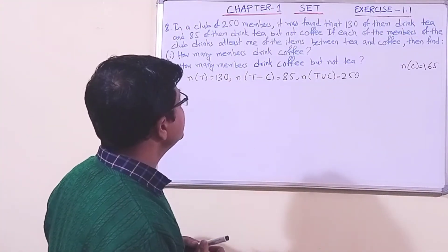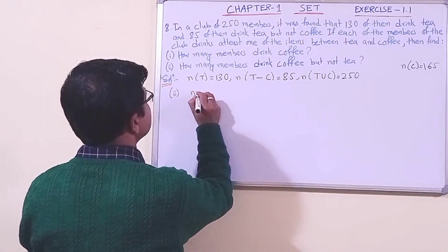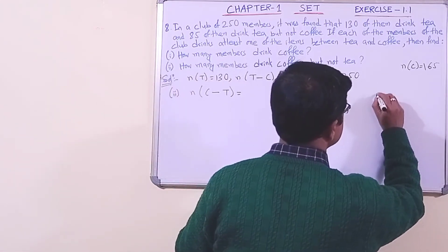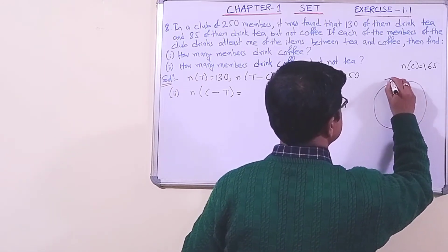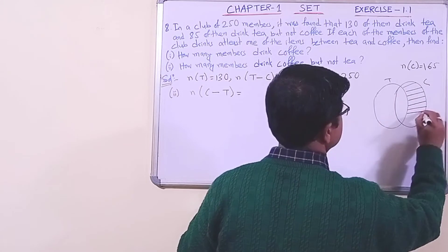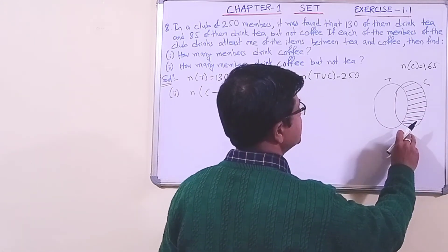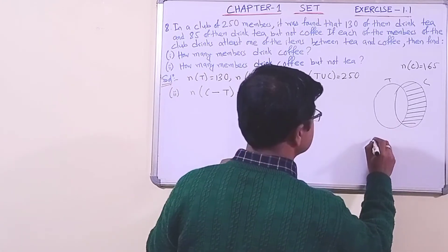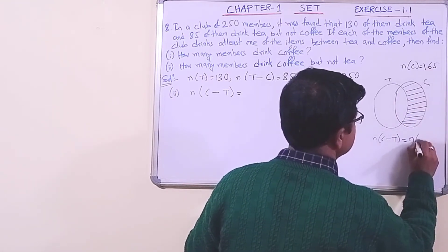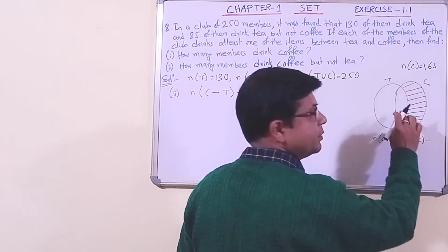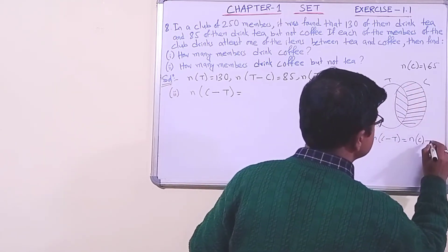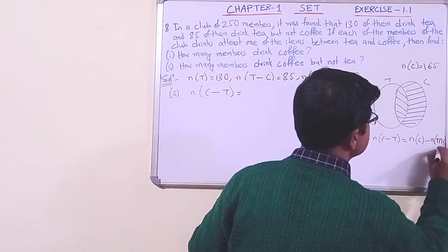Now let us do number two. How many members drink coffee but not tea? So we need to find n(C - T). Let us draw the Venn diagram: this is T, this is C, and we are asked to find the part C minus T. We can easily find n(C - T) if we know n(C), which we have already found, and from n(C) we shall subtract the intersection part n(T ∩ C).